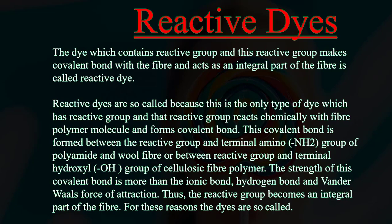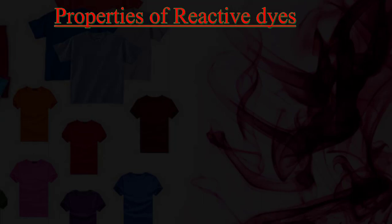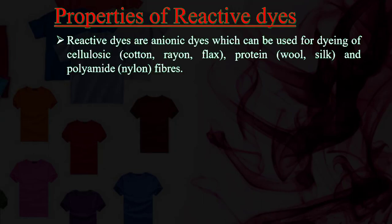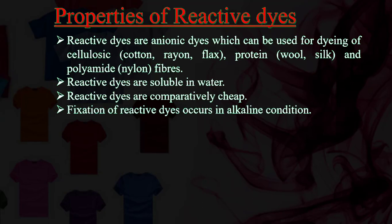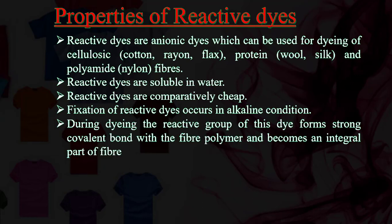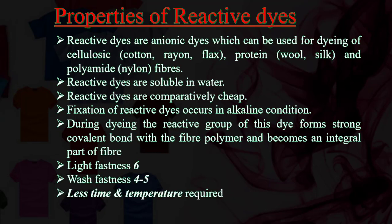Properties of reactive dyes: Reactive dyes are anionic dyes which can be used for dyeing of cellulosic fibers (cotton, rayon, flax), protein fibers (wool, silk), and polyamide fibers. Reactive dyes are soluble in water and comparatively cheap. Fixation of reactive dyes occurs in alkaline conditions. During dyeing, the reactive group forms a strong covalent bond with the fiber polymer and becomes an integral part of the fiber. Light fastness: 6; wash fastness: 4–5; less time and temperature required.